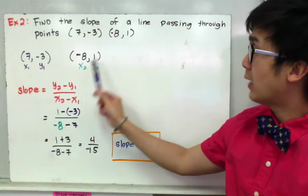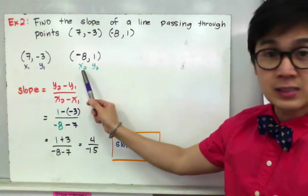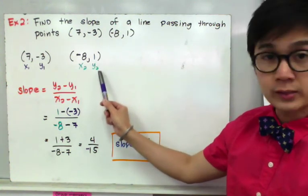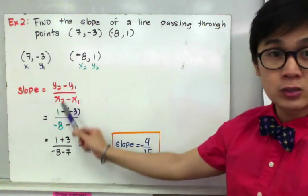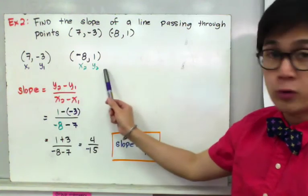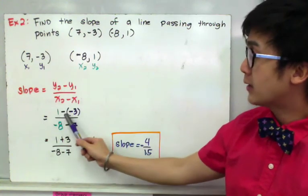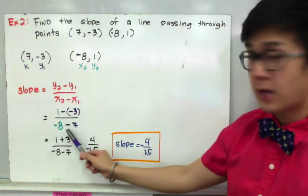And for our second set, we'll have negative 8 as our x sub 2 and 1 as our y sub 2. So using the slope formula, by direct substitution, and after labeling your points, we'll have 1 minus negative 3 all over negative 8 minus 7.